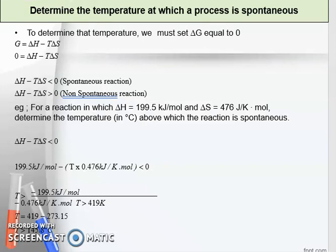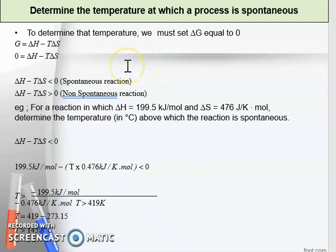Another type of question they will ask is to determine the temperature at which a process is spontaneous. When the process is spontaneous, delta G must be less than zero. This means delta H minus T times delta S must be less than zero for the reaction to be spontaneous.